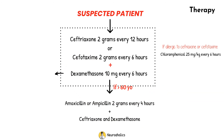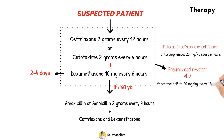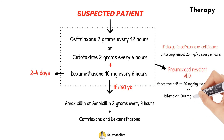Dexamethasone should be stopped at 2 to 4 days even if the patient has deteriorated. If the infection is considered to be caused by resistant pneumococcal organisms, vancomycin 15 to 20 mg per kg every 12 hours or rifampicin 600 mg every 12 hours should be added to the regimen. Antibiotics should then be switched based on the pathogen detected in the blood culture, and antibiotics should be given for at least 10 to 14 days.